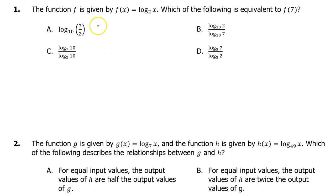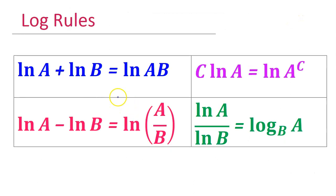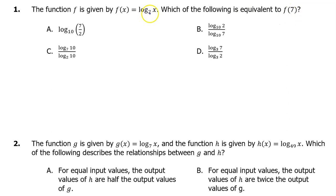Number 1. The function f is given by f of x equals log base 2 of x. Which of the following is equivalent to f at 7? These are the four log rules you need to memorize. For this problem, we will need the green one called the change of base formula. f at 7 means plug in 7 for x, so f at 7 is going to be log base 2 of 7.